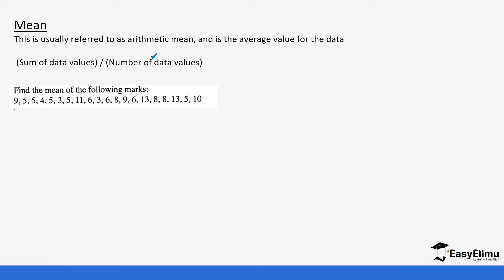The number of data values is simply how many values there are. Counting through the data: 1, 2, 3, 4, 5, 6, 7, 8, 9, 10, 11, 12, 13, 14, 15, 16, 17, 18, 19, 20. So we have a total of 20 data values. After that, we need to get the sum of the data values.